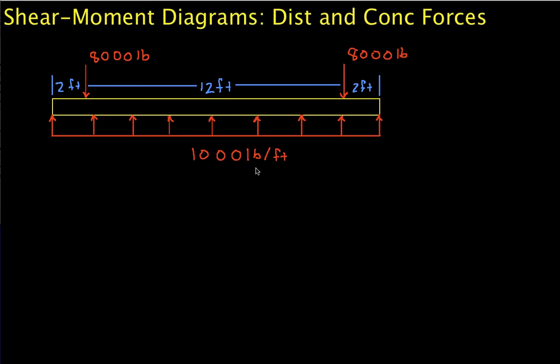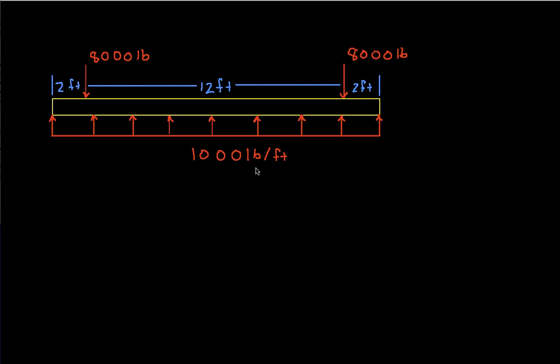Welcome to this video in which we show how to find shear and moment diagrams when you have a beam that has both distributed and concentrated forces loading it. We have a beam with a distributed force creating 1,000 pounds per foot upward along its length, and two concentrated 8,000 pound forces going downward. Our goal is to find the shear diagram and then integrate it to find the moment diagram.